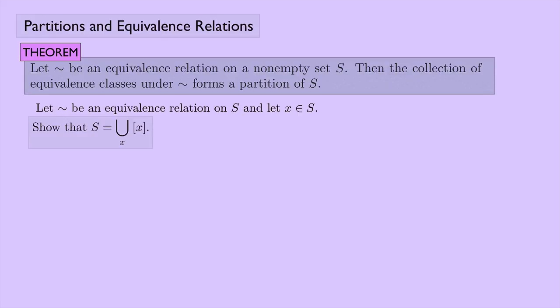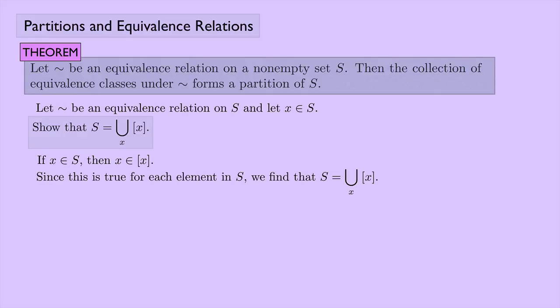The first thing we're going to show is that S is the union of all the different cells. If X is in S, then we showed earlier that X belongs to the equivalence class of X. If that's true for each element in S, then S must be the union of all the different equivalence classes. That's pretty easy.